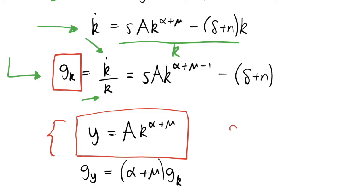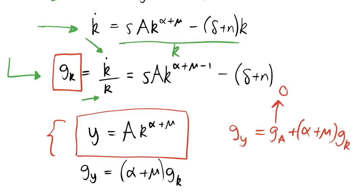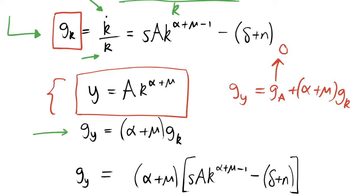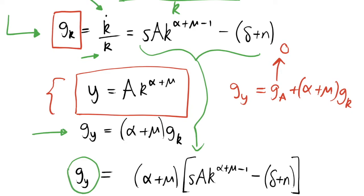Using rules of logs, the growth rate of y equals the growth rate of A plus (alpha + mu) times the growth rate of k. The growth rate of A is zero since it is a constant parameter. To find the growth rate of output per capita we use this equation and substitute in our growth rate of capital per capita. We then want to use these to find where we have a balanced growth path, where capital, output per capita, wages, the rental rate, and consumption all grow at a constant rate.